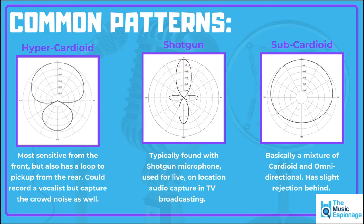Subcardioid sits somewhere between hypercardioid and cardioid. There's no definitive rejection from the rear of the microphone at 180 degrees, but there is slight rejection from behind. It will pick up the sound source from the front the loudest, but it also picks up some ambience and background sound from the rear of the microphone.